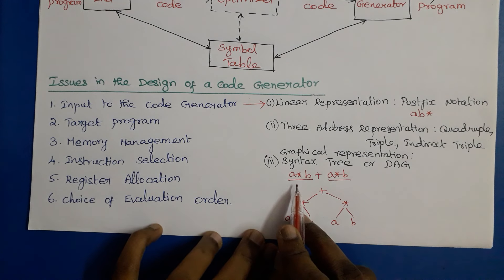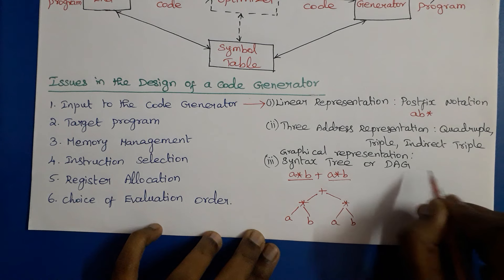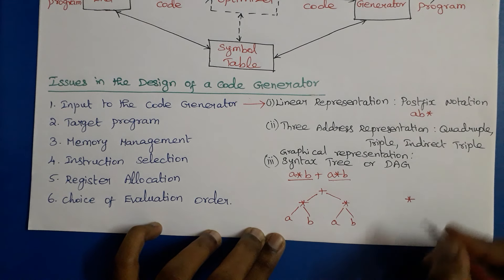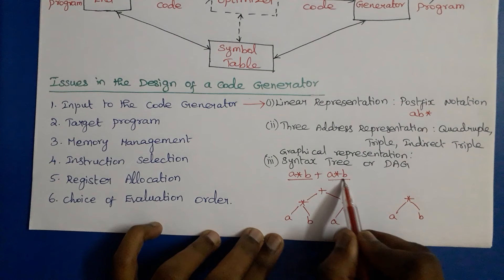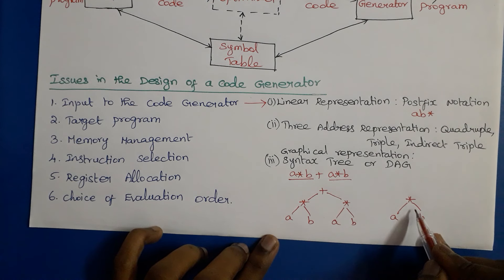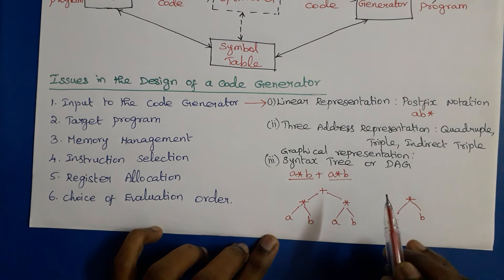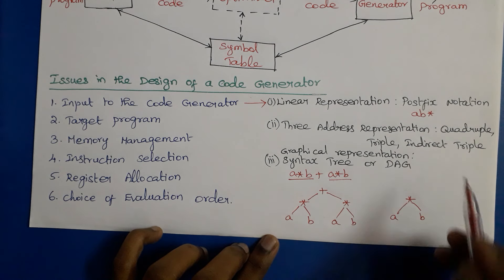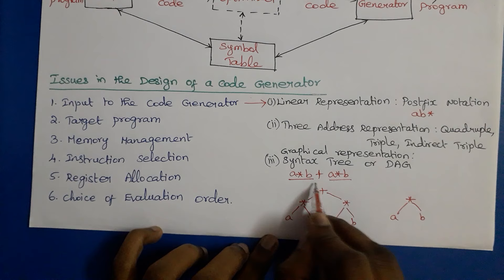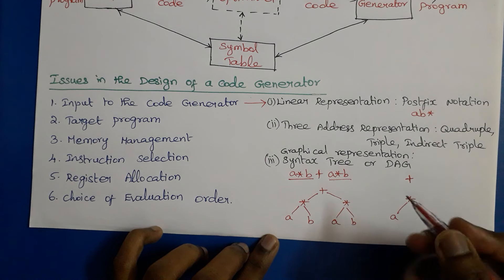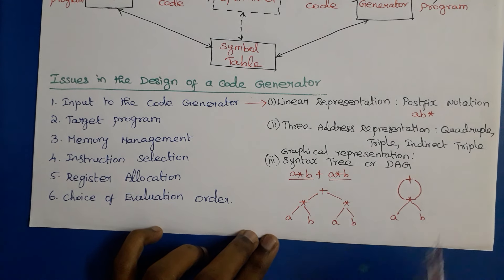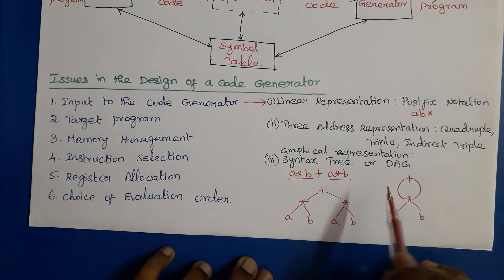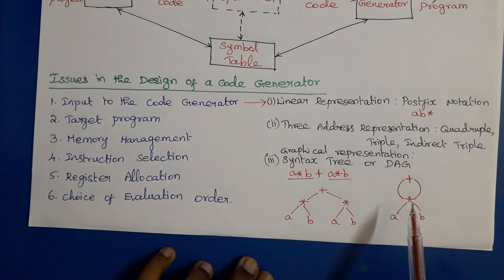For the same example, a DAG (Directed Acyclic Graph) is constructed differently because common subexpressions are eliminated. We construct the DAG with '*' as root, 'a' as left child, 'b' as right child. When 'a * b' needs to be evaluated again, there is no need to construct it again because in a DAG common subexpressions are identified and not reconstructed. Then '+' is executed as root, with the left and right subtrees both pointing to the same '*' node. This is the DAG representation.